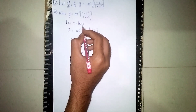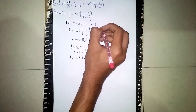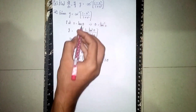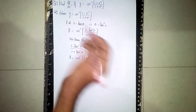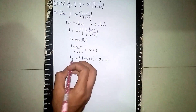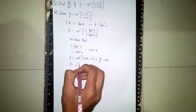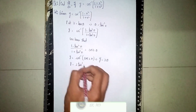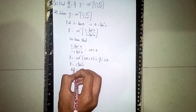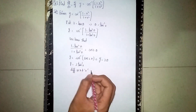Since x equals tan theta, sending tan to the other side makes it the inverse, so theta is equal to tan inverse of x. Now substituting the value of theta, it becomes y is equal to 2 tan inverse x.